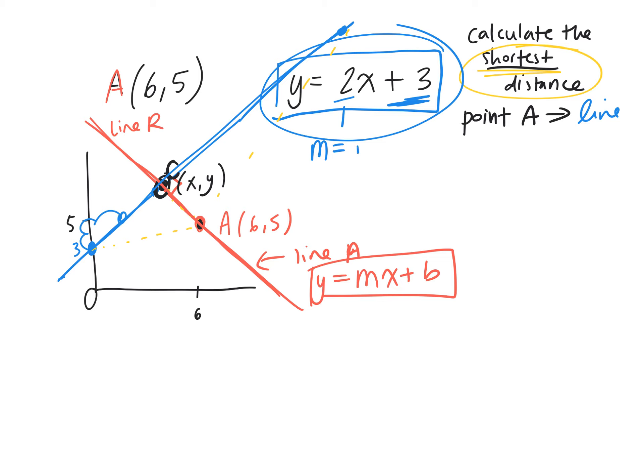So what's the slope of the blue line? Positive 2 over 1. So the slope of the red line would have to be negative 1 over 2.